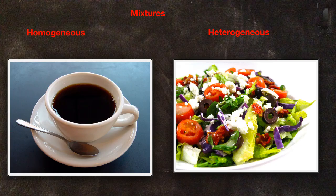The third type of matter we need to review is mixtures. Mixtures are formed by two or more substances that are not chemically bonded. Since they're not chemically bonded, they can be separated by a physical change. Mixtures retain their properties. And remember, mixtures can be homogeneous, which means they are uniform and look the same throughout, like a cup of coffee. Or heterogeneous, which means it is non-uniform, and whenever the substances are mixed together, they still retain their physical appearance.